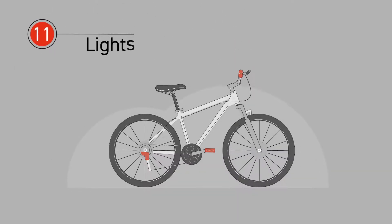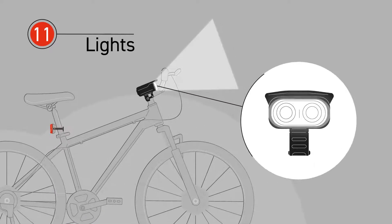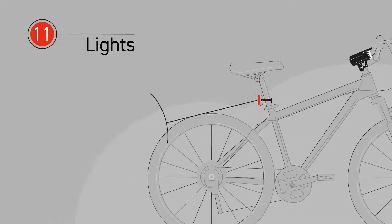To ride in the dark, you need reflectors and working front and back lights. Check they're clean and attached securely.